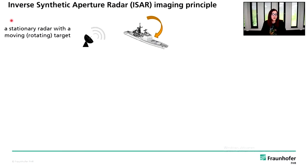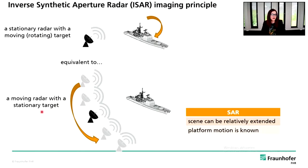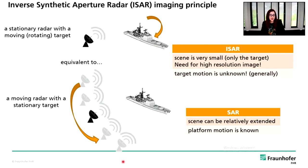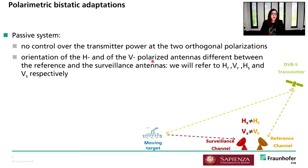In ISAR imaging, we usually have a stationary radar with a moving or rotating target — though equivalently, we can view this as a moving radar with a stationary target, as is the case in SAR. While in the SAR context the scene can be relatively extended and the platform motion is known, in ISAR we focus on the target, requiring high-resolution imaging even though target motion is usually not known — so we must estimate and compensate it to obtain a focused radar image. We also need to consider the intrinsically bistatic geometry of the passive system and make some assumptions to facilitate interpretation of ISAR images.